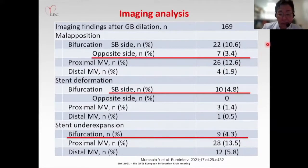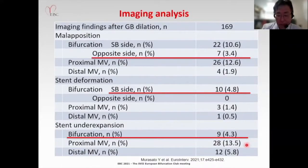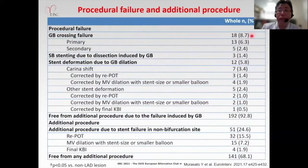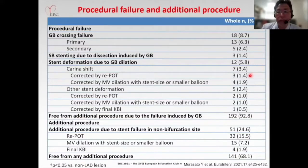In imaging analysis immediately after Glider balloon dilation: malapposition occurred more frequently at the side branch site; side branch opposite site malapposition occurred in only 3.4% of cases. Stent deformation at the bifurcation was observed only at the side branch site. Stent under-expansion and malapposition remained in the proximal main vessel in 13%, requiring additional procedure. Glider balloon crossing failure was observed in 8.7%, but secondary failure after small balloon dilation was found in only 2.4%. Side branch stenting due to dissection occurred in 1.4%. Stent deformation due to Glider balloon dilation was found in 5.8%, with correction by lip part performed in 2.4%.